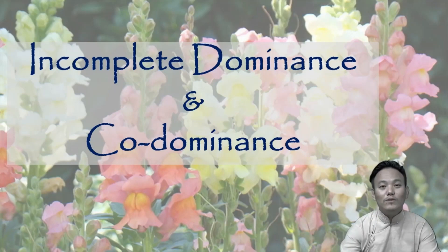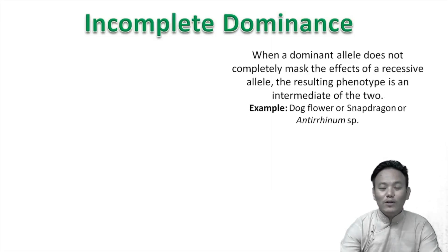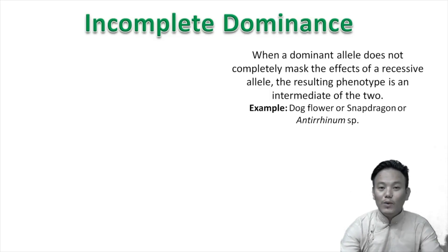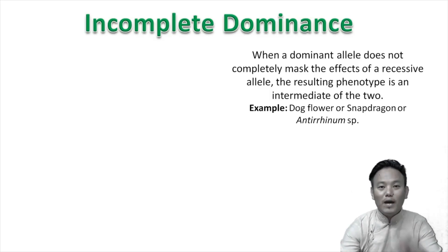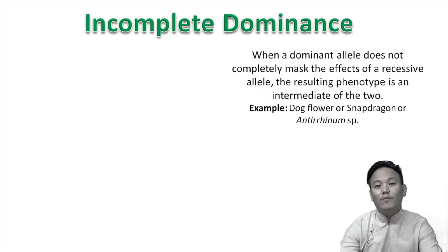So we will study two of those phenomena today: incomplete dominance and co-dominance. These two examples you can provide to support the argument that Mendel's first law of dominance is not universal. Incomplete dominance means that when a dominant allele does not completely mask the effects of a recessive allele, the resulting phenotype is an intermediate of the two parents.